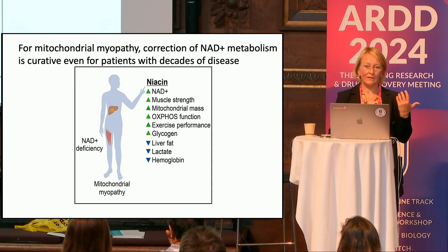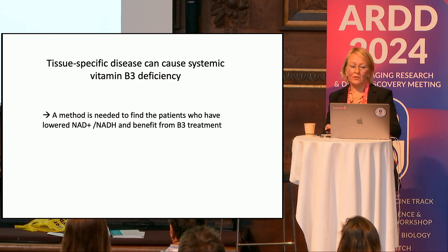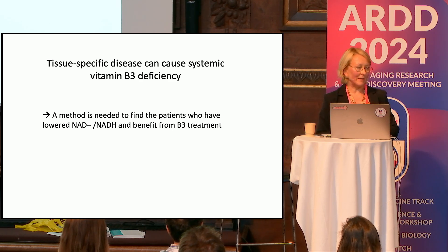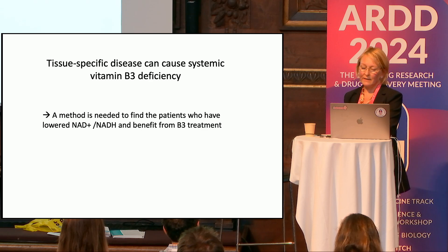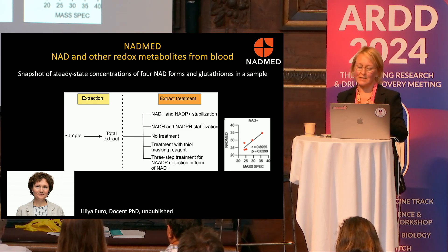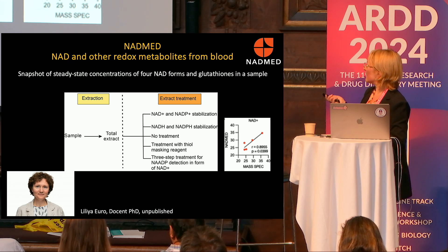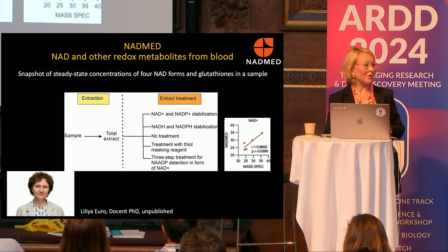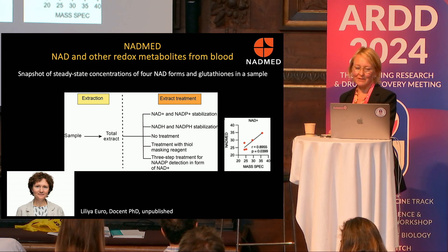Because I'm a doctor, I wanted to find the patients who would benefit from this — do we have a test to find these patients effectively? Lilia Euro in my lab succeeded in developing a test for all the NAD forms and also glutathione from one blood drop. The mass spec validation of this test was performed, and this has been developed into the NADMED startup, which is also supporting this conference, to start up this testing system.